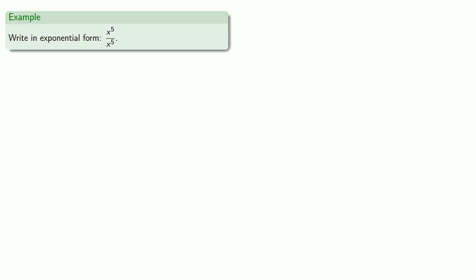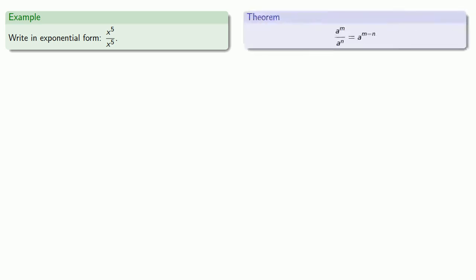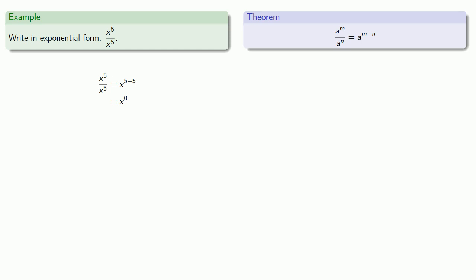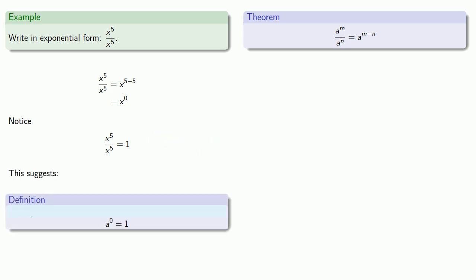What about x to the five over x to the five? Our theorem for the quotient of exponents says this is x to power five minus five, which is x to the zero. Here we have to discard common sense and use only logic. X to the zero says x appears zero times — so what do we actually have? Logic says that x to the five over x to the five, anything divided by itself, is equal to one. This suggests that a to power zero must equal one — but not quite. We must not divide by zero, so this works only when the base is not equal to zero. We add the qualifier: for a not equal to zero, a to power zero is equal to one.